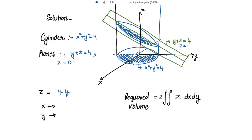We need the value of z, which we can get from the plane y + z = 4. So z = 4 − y. Now for the limits: in the innermost integral we have dx, so the limits of x will be in terms of y. The value of x on the curve is √(4 − y²), so x goes from 0 to √(4 − y²).